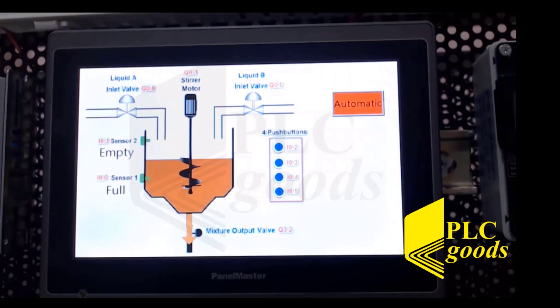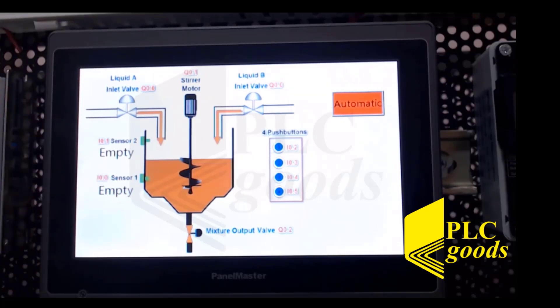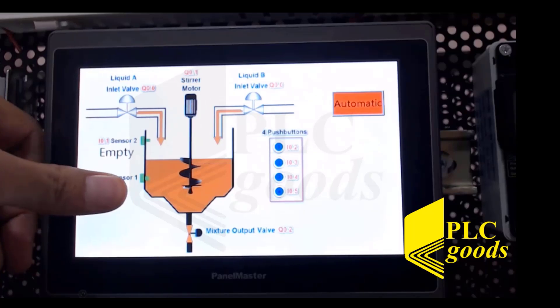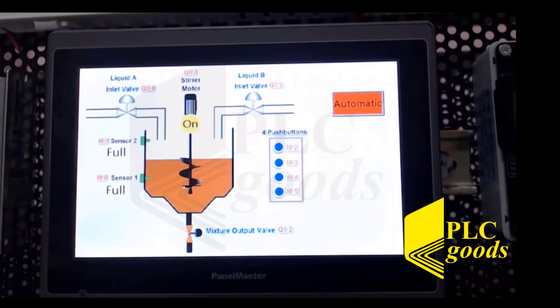So again I repeat it. I tell the system the container is half full and now it's empty. Completely again, cycle started, liquids are coming in. I say now it's half full, complete.